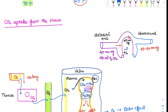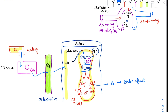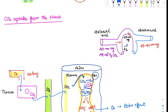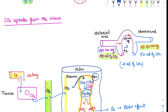Now coming to CO2 uptake from the tissue. CO2 is produced constantly in the tissue and transported to the venous side. In arterial blood, the CO2 partial pressure is 40 mmHg and the CO2 content is 48 ml. As blood moves to the venous side, partial pressure increases to 45–46 mmHg and the content increases to 52 ml. So 4 ml of CO2 is carried for every 100 ml of blood.